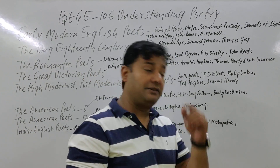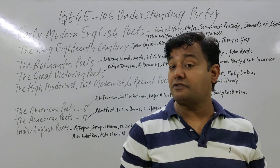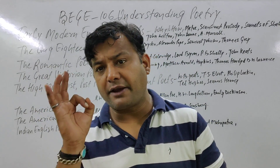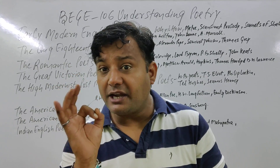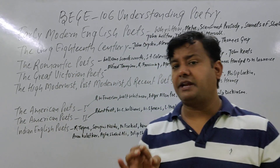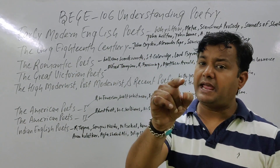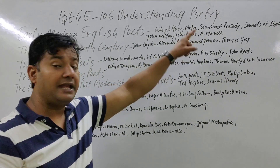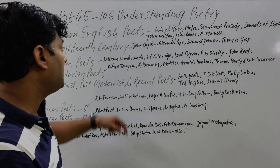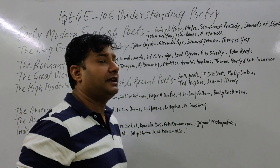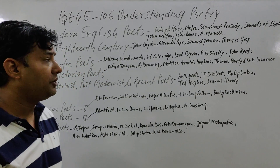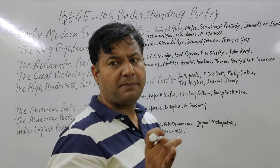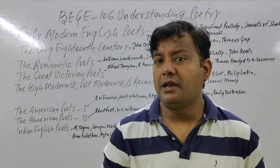Then we are having the sonnets. The first thing we are having is the Sonnets of Shakespeare — specifically Sonnets 29 and 30. Please write this down: Sonnets 29 and 30. Then we will move to certain British poets: John Milton, John Donne, and Andrew Marvell. We need to understand how to approach their poetry.